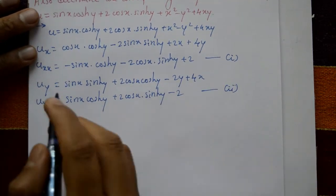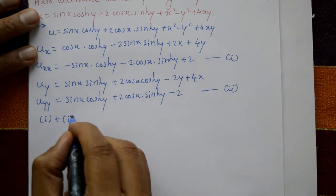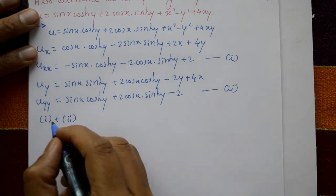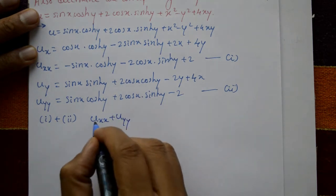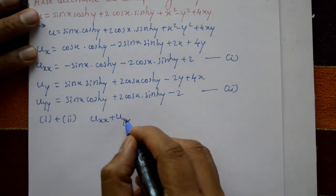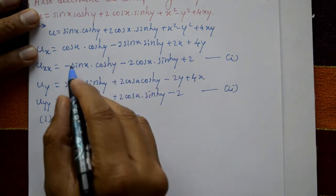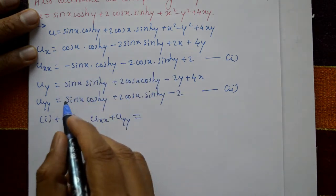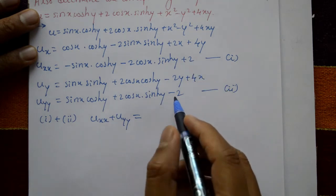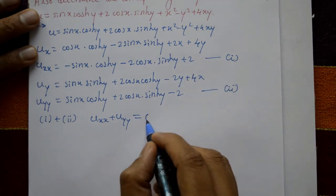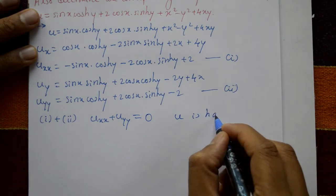Now adding equation 1 and equation 2: ∂²u/∂x² plus ∂²u/∂y² is equal to — adding these two equations, the minus sign and plus cancel, minus minus gives plus and the plus and minus cancel — that is equal to 0. This means u is harmonic.